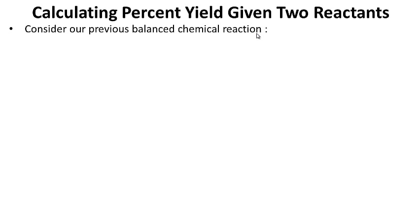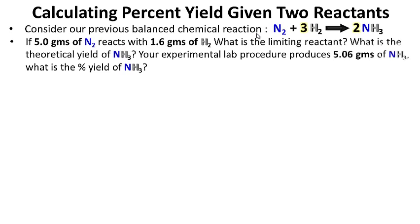Calculating percent yield given two reactants: now I'm not telling you one is in excess — I'm giving you the amounts of two reactants, so it's like a limiting reactant problem. Consider the balanced chemical reaction: if we have 5 grams of N2 and 1.6 grams of H2, what is the limiting reactant and the theoretical yield of NH3? The experimental procedure produces 5.06 grams of NH3 — what is the percent yield? We need to first determine the limiting reactant.